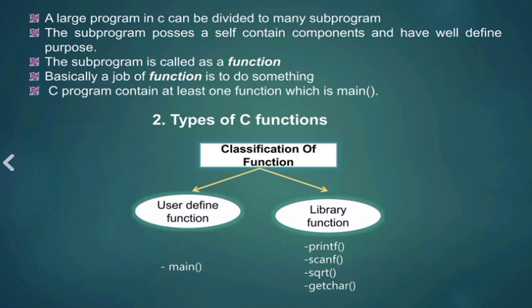Next, types of C functions. C function can be classified into two types: User-defined function and library function. The user-defined function is main function. The library functions such as printf functions, scanf functions, square root functions, getchar functions, etc.